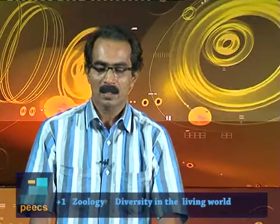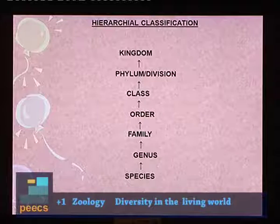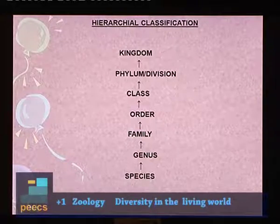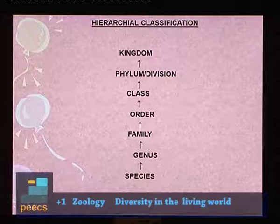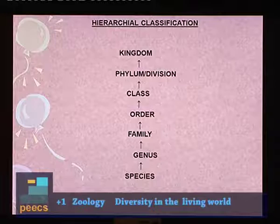This is the hierarchical classification we discussed. These are the categories starting from species ending at kingdom. Species is the basic unit of classification, followed by genus, family, order, class, phylum (for animals) or division (for plants), and kingdom — all categories of hierarchical classification.